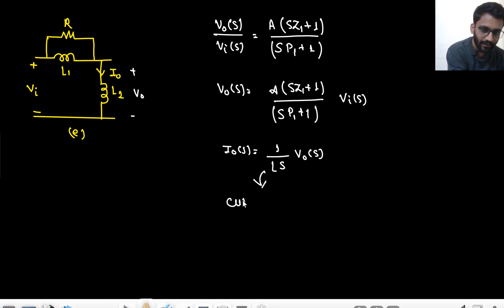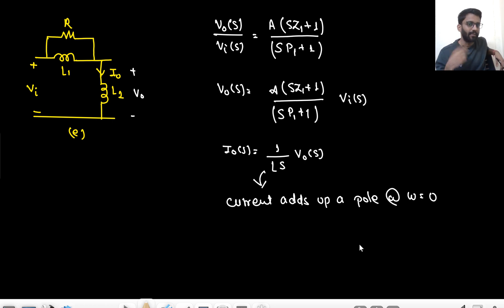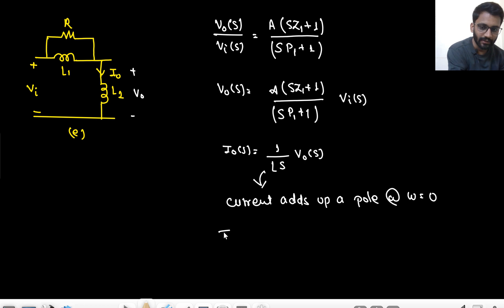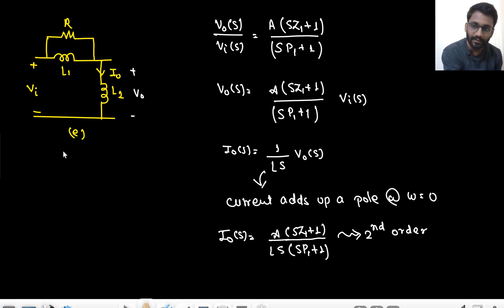The current through an inductor adds up a pole at ω = 0, because we multiply by 1/(L·s). So the order of the circuit increases for current output. For voltage it was first order, but for current it would be second order. So I_out(s) = A/(L·s) × (s/z1 + 1) / (s/p1 + 1) × V_in(s) — this is a second-order circuit.